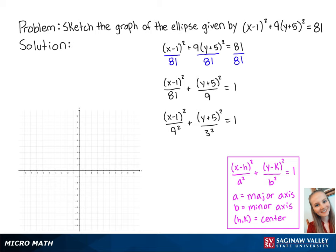Now that we have our equation in standard form, we know that a is equal to 9 and will be horizontal since it is underneath the x, b equals 3 and will be vertical since it is underneath the y, and the center is at (1, -5).